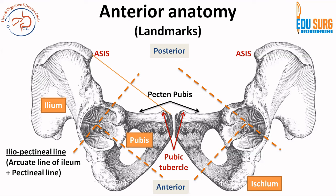If we draw a line from the anterior superior iliac spine to the pubic symphysis, the point in the middle of this line is known as the mid-inguinal point. This is a very commonly asked question for surface landmarks in practicals, exams, and MCQs — the mid-inguinal point versus the midpoint of the inguinal ligament.